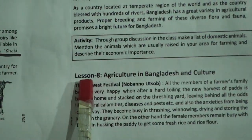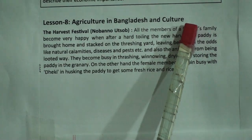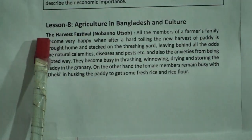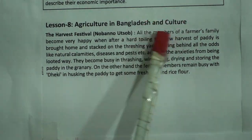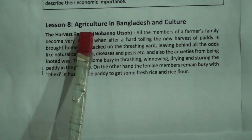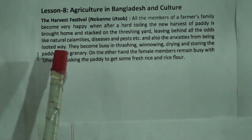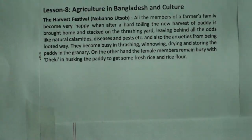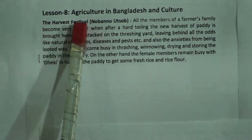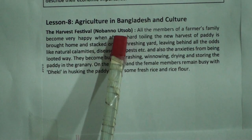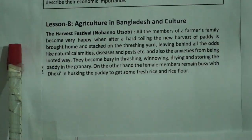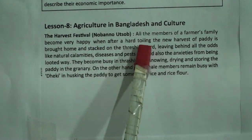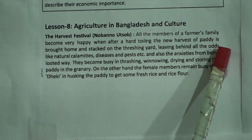Lesson 8: Agriculture in Bangladesh and Culture. The Harvest Festival — also called Nabanna — tells us how our culture is mainly dependent on agriculture. All the members of a farmer's family become very happy when, after hard toiling, the new harvest of paddy is brought home and stocked on the threshing yard.